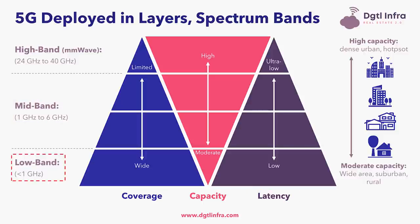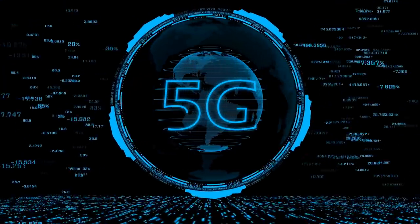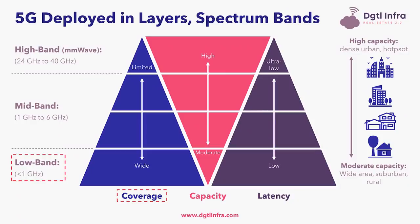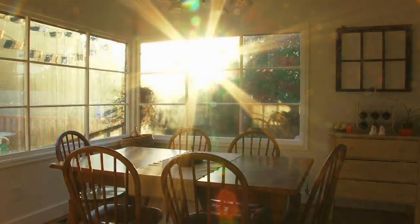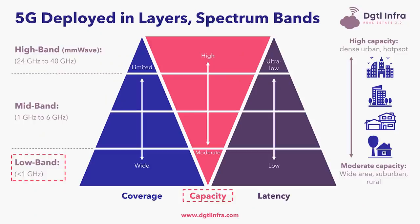Finally, low-band — known as coverage spectrum — includes frequencies such as 600 MHz, 700 MHz, and 850 MHz, which are the foundation for the 5G network. Low-band signals can penetrate walls in a similar way in which light goes through glass, providing better indoor coverage and the widest coverage in general. Compared to 4G, low-band provides higher speeds for 5G mobile broadband across urban, suburban, and rural areas, but it's much slower compared to mid-band and high-band 5G. Latency for low-band is much higher compared to mid- and high-band frequencies.